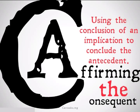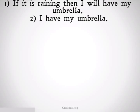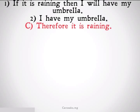Let's take a look at some examples to understand why this doesn't work. If it is raining, then I will have my umbrella. I have my umbrella, therefore it's raining. Clearly, this is a false conclusion — or at least the conclusion doesn't follow from the premises. The reason why is maybe I take my umbrella to work every single day.